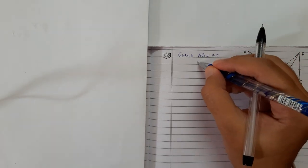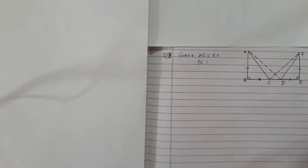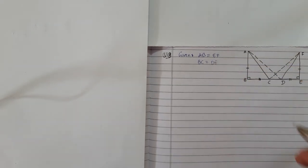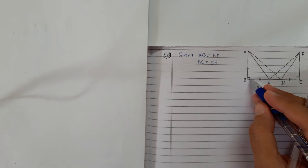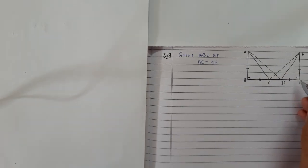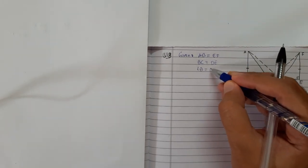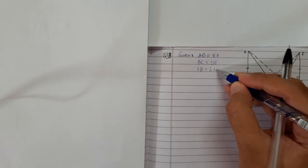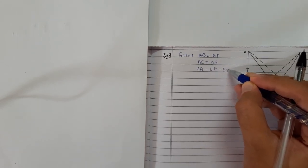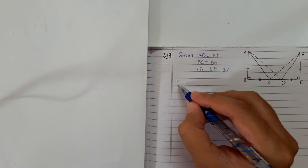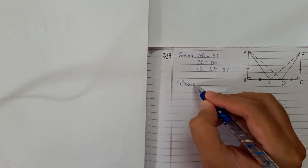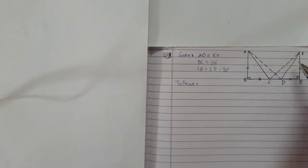I should also write BC equals DE, and the next part given is angle B, which I've already marked, equals angle E equals 90 degrees. Three things are given. Now what we need to prove is AD equals CF, this part.